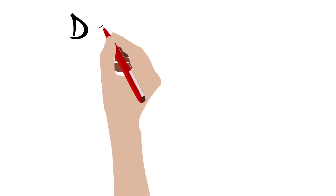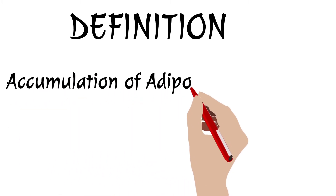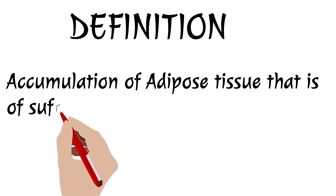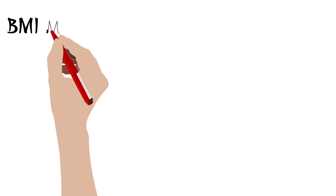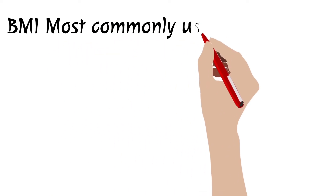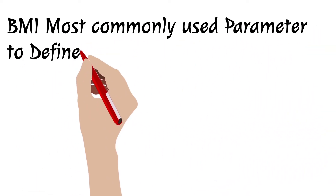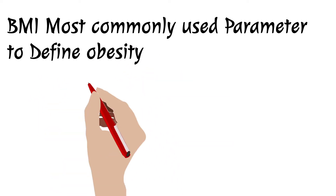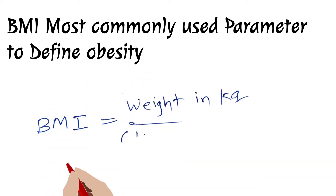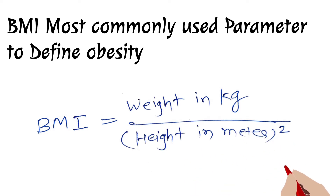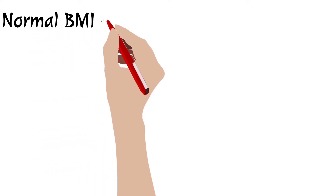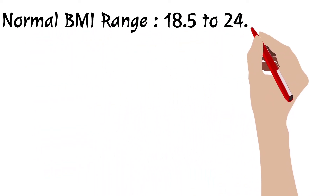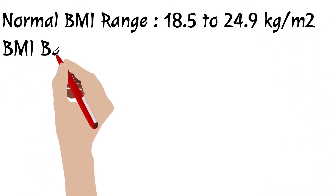First, the definition: obesity means accumulation of adipose tissue of sufficient magnitude to impair health. The body mass index (BMI) is the most commonly used parameter to define obesity. BMI is weight in kilograms divided by height in meters squared. If BMI is more than 25, the individual is considered overweight.